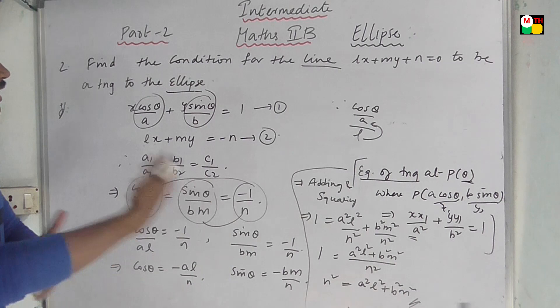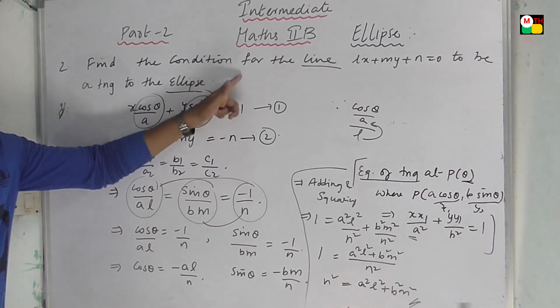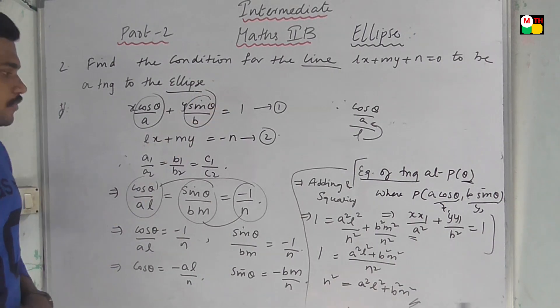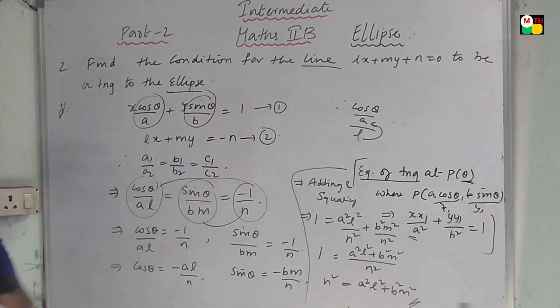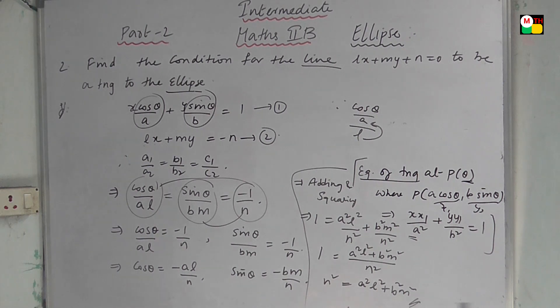So the condition is a square l square plus b square m square equal to n square. This is the answer — note this as a direct formula for exams. If you found this helpful, please subscribe to the channel. Thank you.